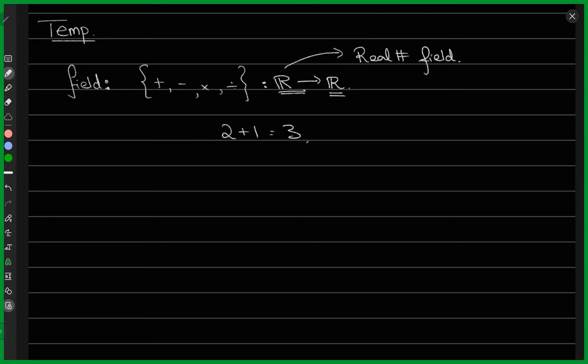This is also how we define scalars. You may have heard the boring definition: scalars have magnitude but no direction; vectors have both. But here is a more interesting definition of scalars — they belong to a field of real numbers. Temperature is a scalar field.